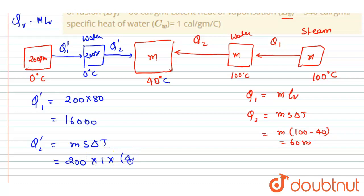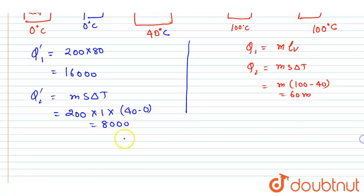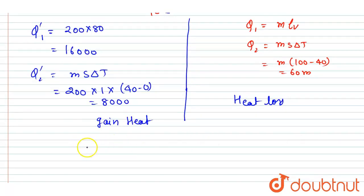The temperature change is this minus 0, so it is 8000. So on the left side we have written the heat gain, and on the right side we have written the heat loss. So just equate the two since the system is not taking any heat from outside.